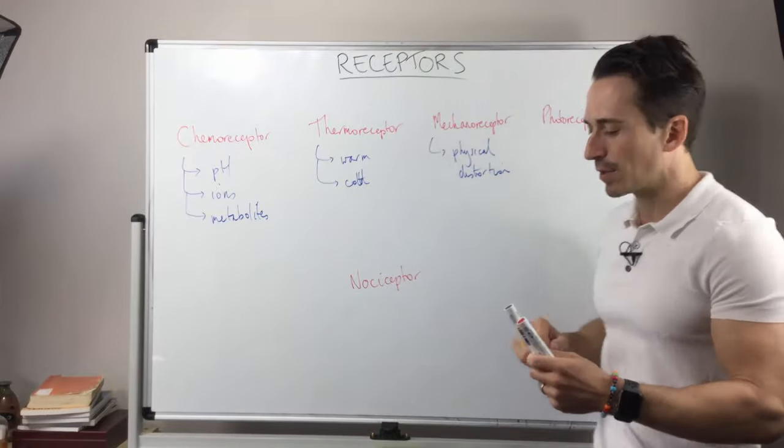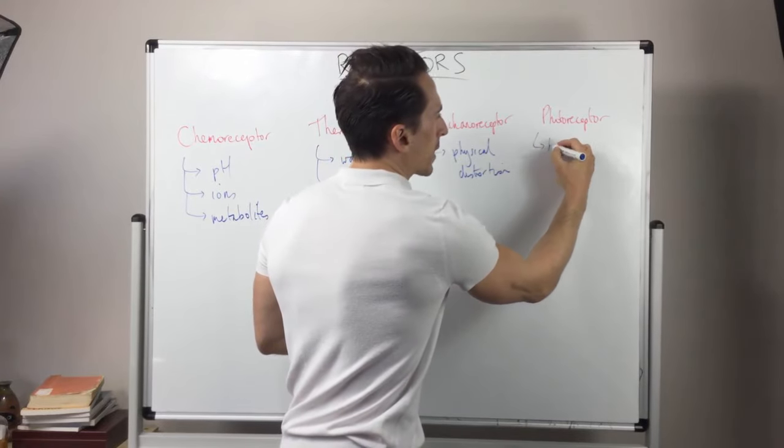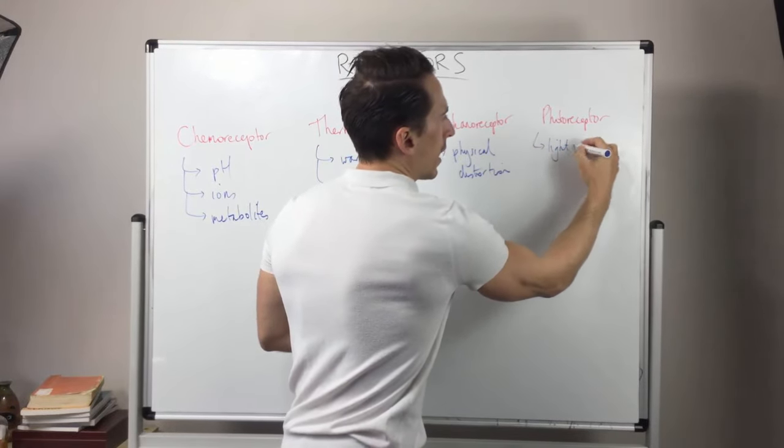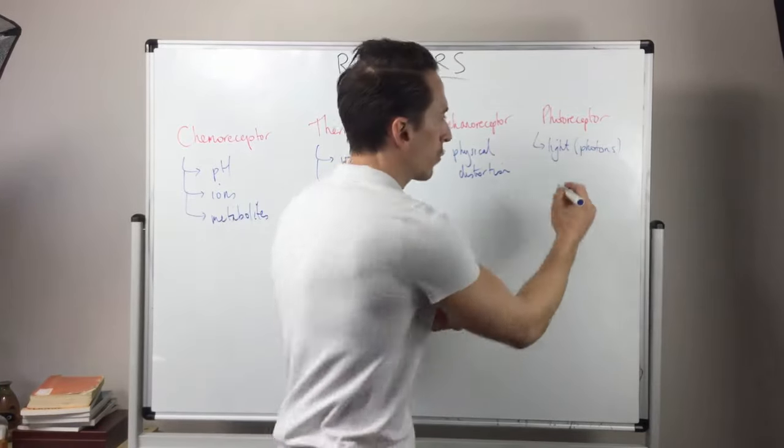This is mechanoreceptors. The last one we've got here is photoreceptors, and they're specifically picking up light or photons, and these are primarily located in the retina of the eye.